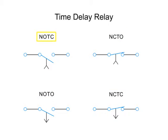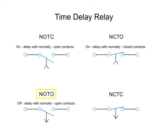NOTC functions as an on delay with normally open contacts. NCTO operates as an on delay with normally closed contacts. NOTO functions as an off delay with normally open contacts. And NCTC operates as an off delay with normally closed contacts.